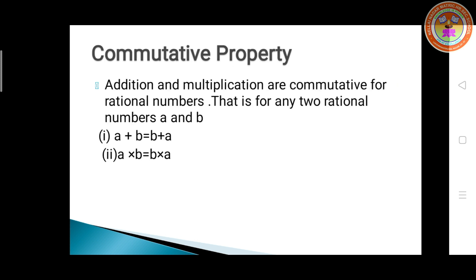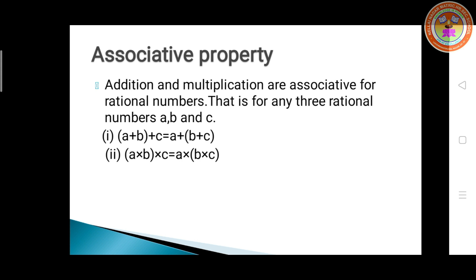The next property is commutative property. Addition and multiplication are commutative for rational numbers. That is, for any two rational numbers A and B, the first statement is A plus B is equal to B plus A — this is for addition. Now we'll see the multiplication: the second statement, A into B is equal to B into A. Now we'll move on to the third property.